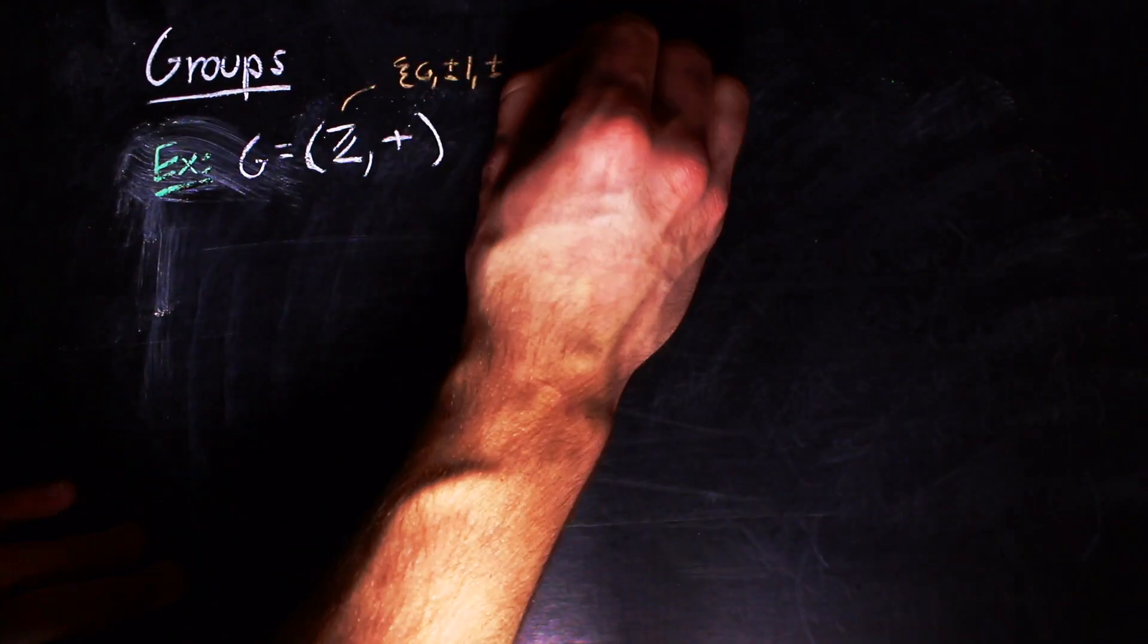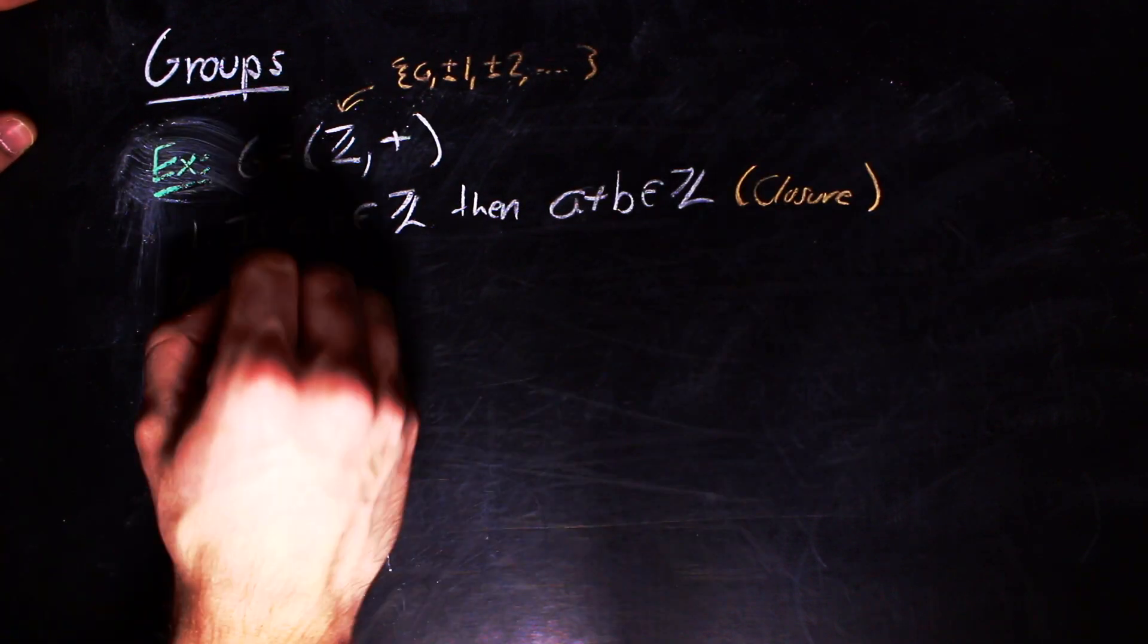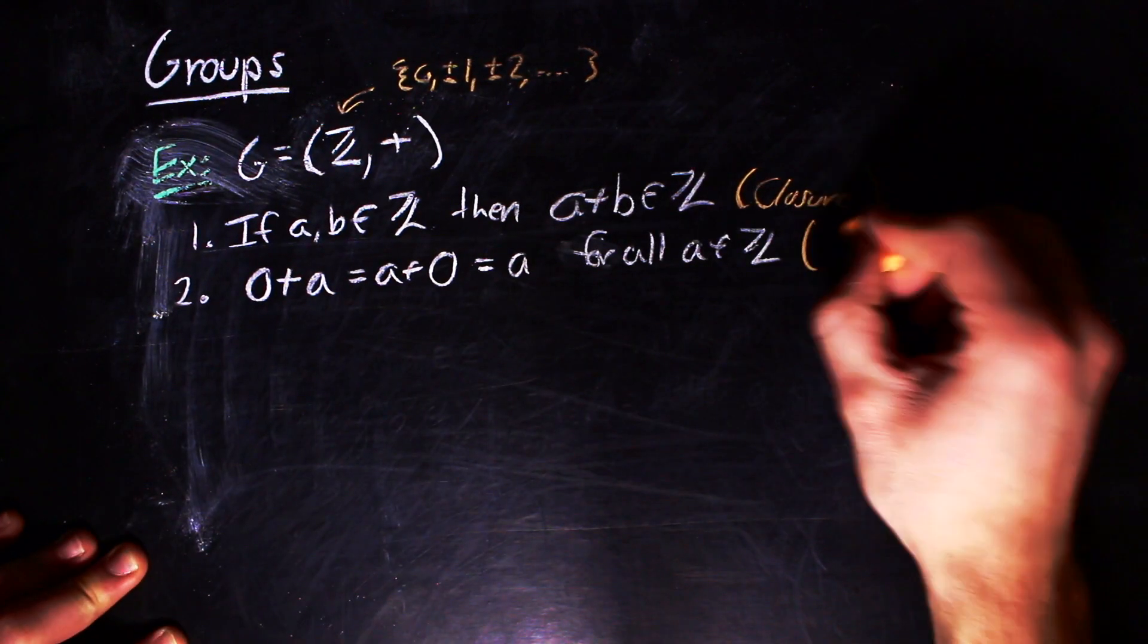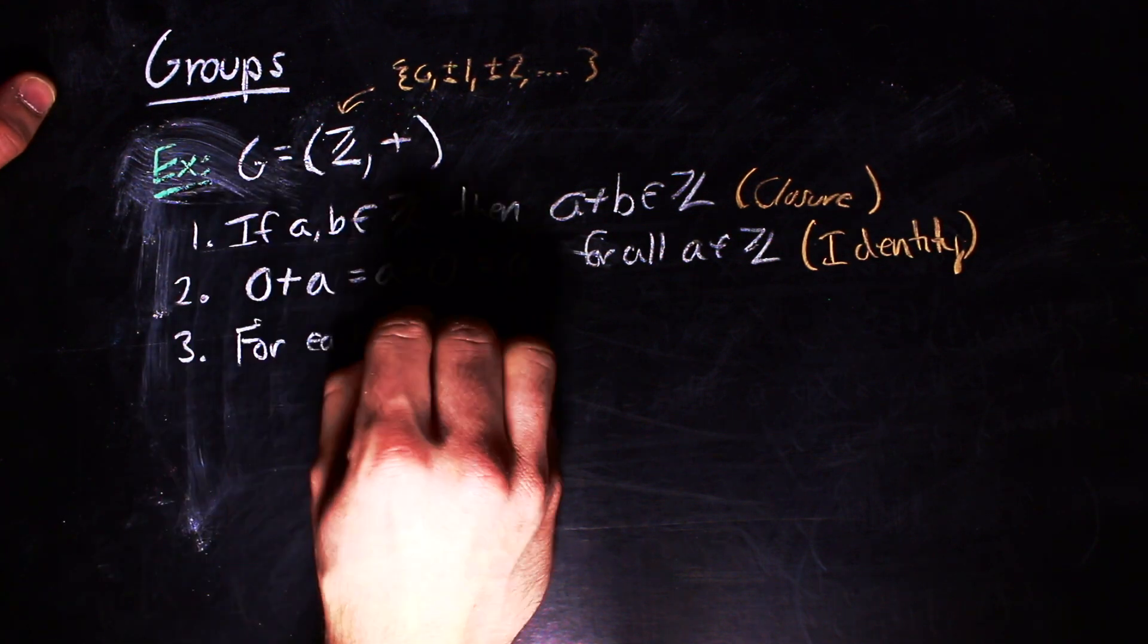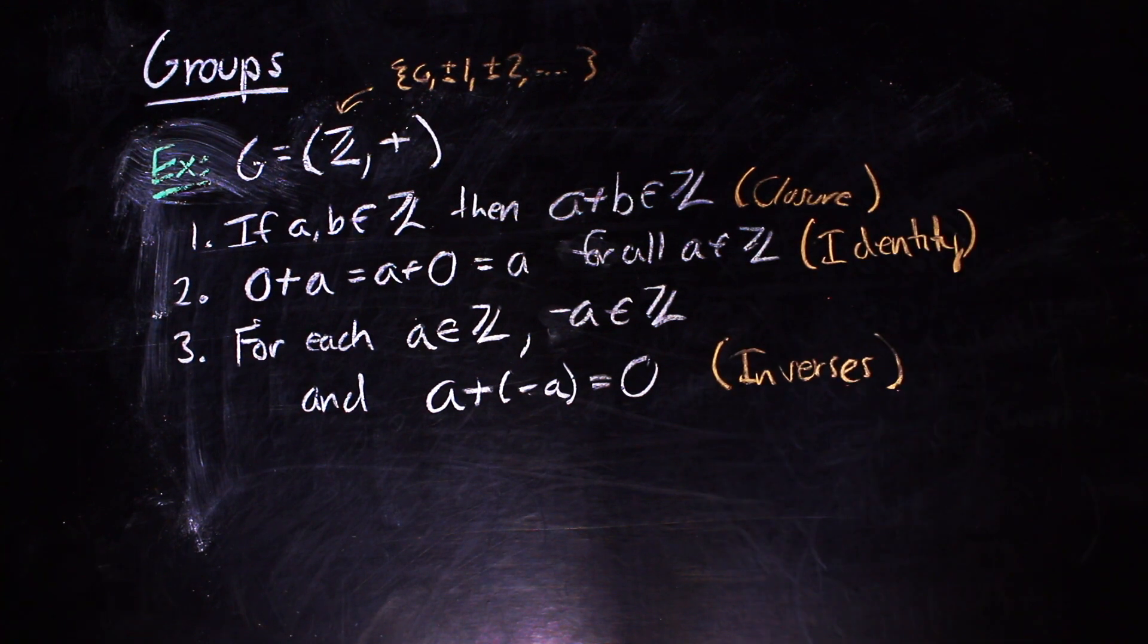That may seem like a lot of conditions to check, so let's go through an example. Take the integers and addition. We can see that the sum of any pair of integers is another integer. Zero plus any integer is that integer. And each non-zero integer has a negative counterpart, such that their sum is zero. So we have a group.